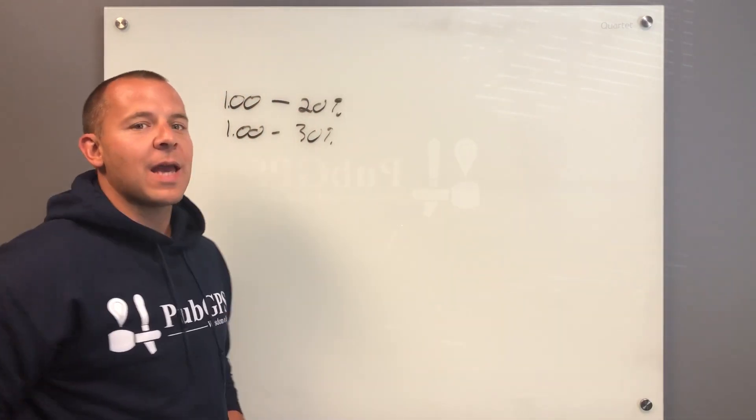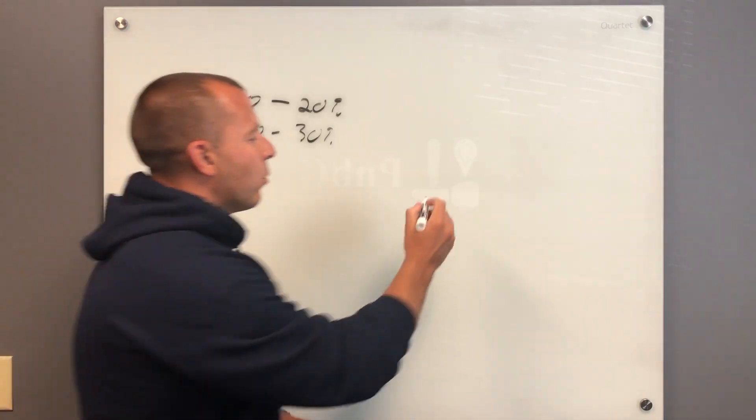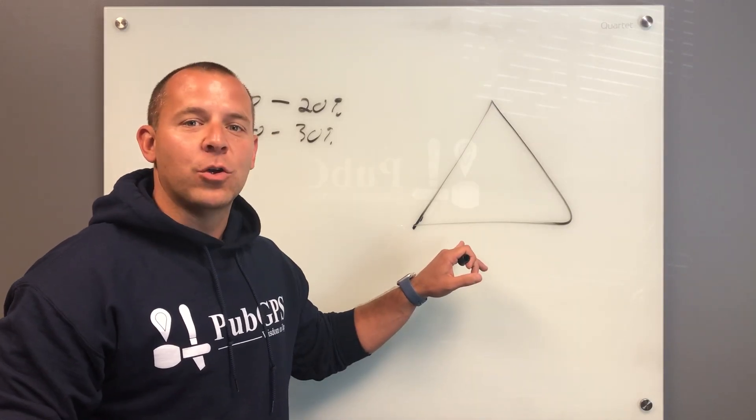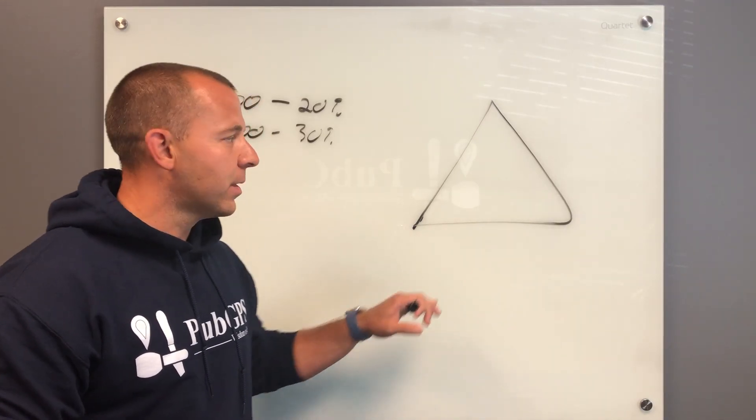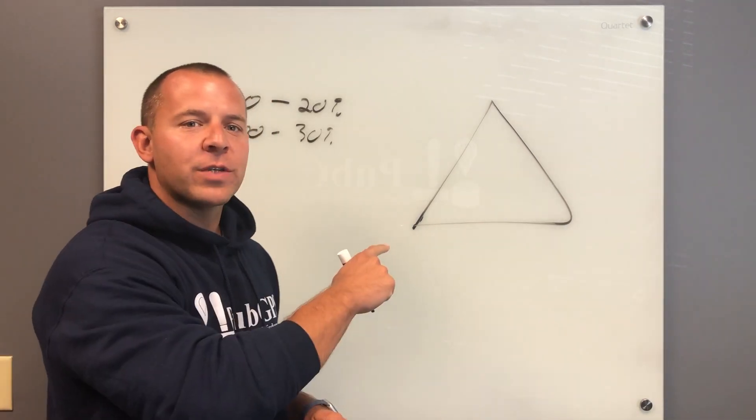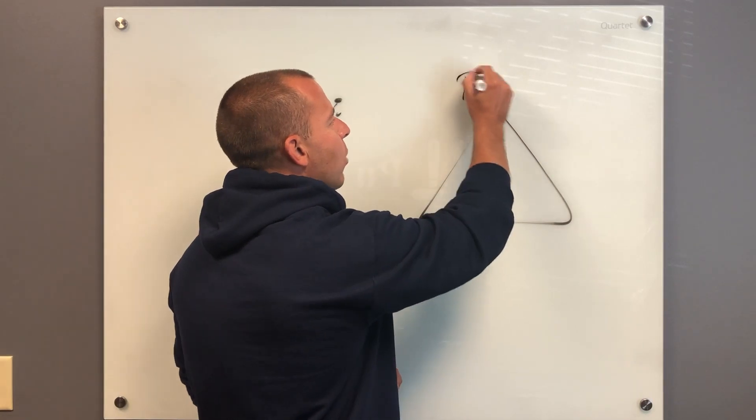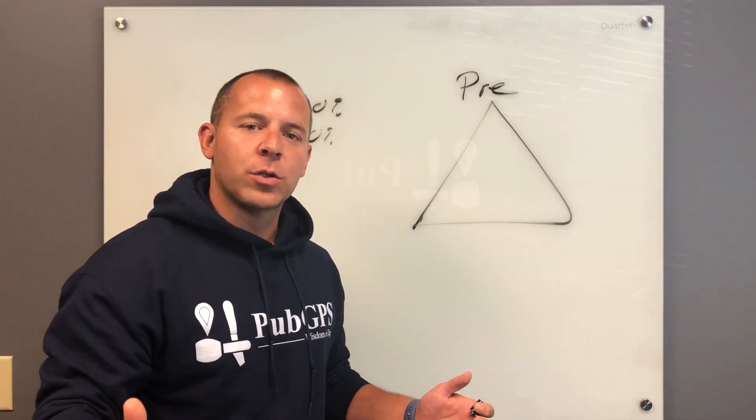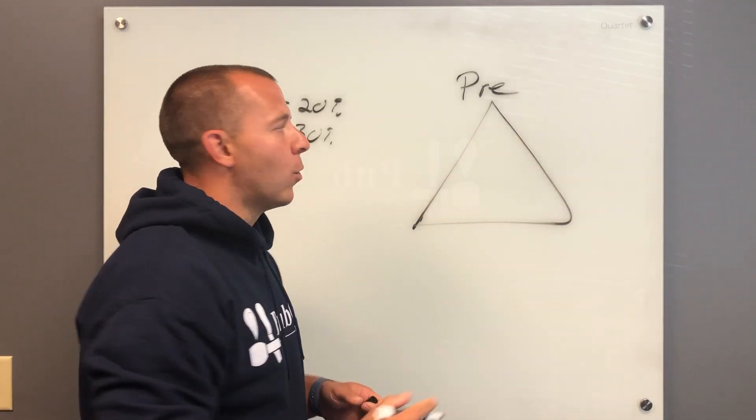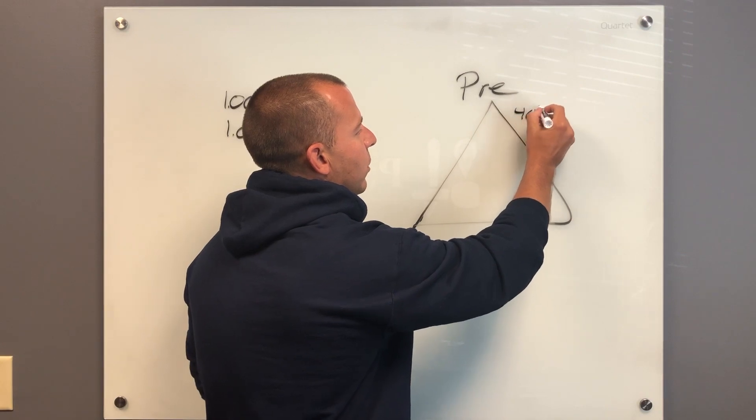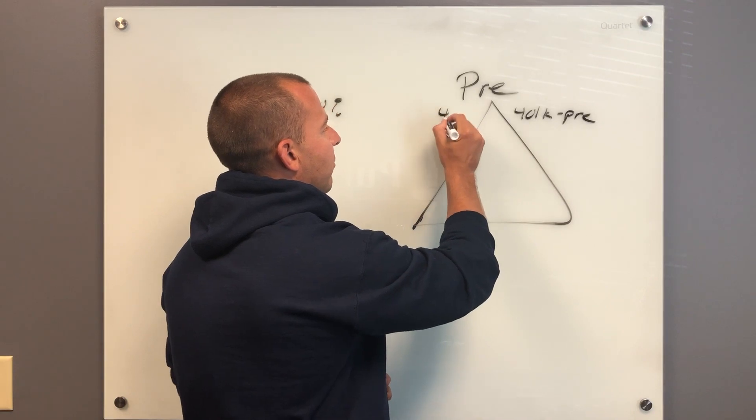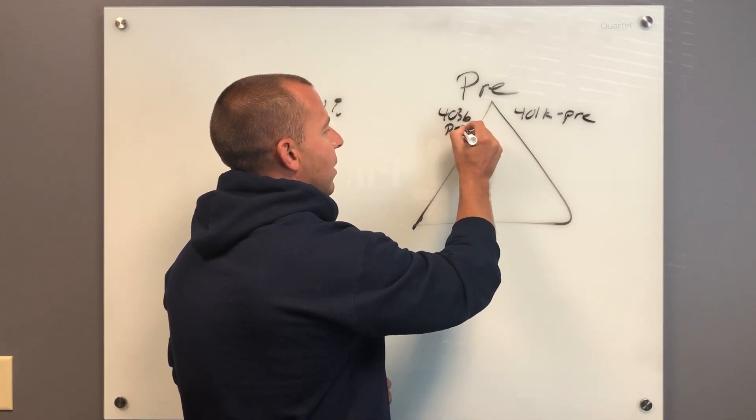So today we're talking about—I mean, could there be a geekier name than the tax control triangle? This is fantastic where we come up with this stuff in the financial world. But this is your tax control triangle, and what you want to focus on: number one is what you're accustomed to—this is saving pre-tax, kicking the tax can down the road to a later point in time. This would include things like putting money in your 401k pre-tax, putting money in 403Bs pre-tax, and saving to like your traditional IRA before tax.